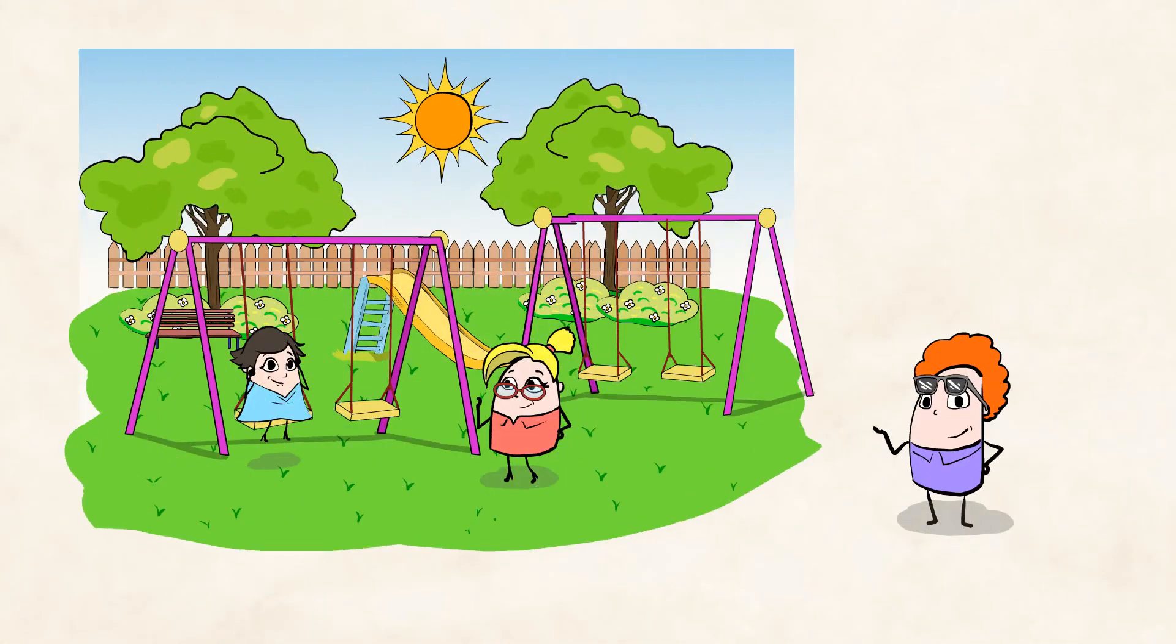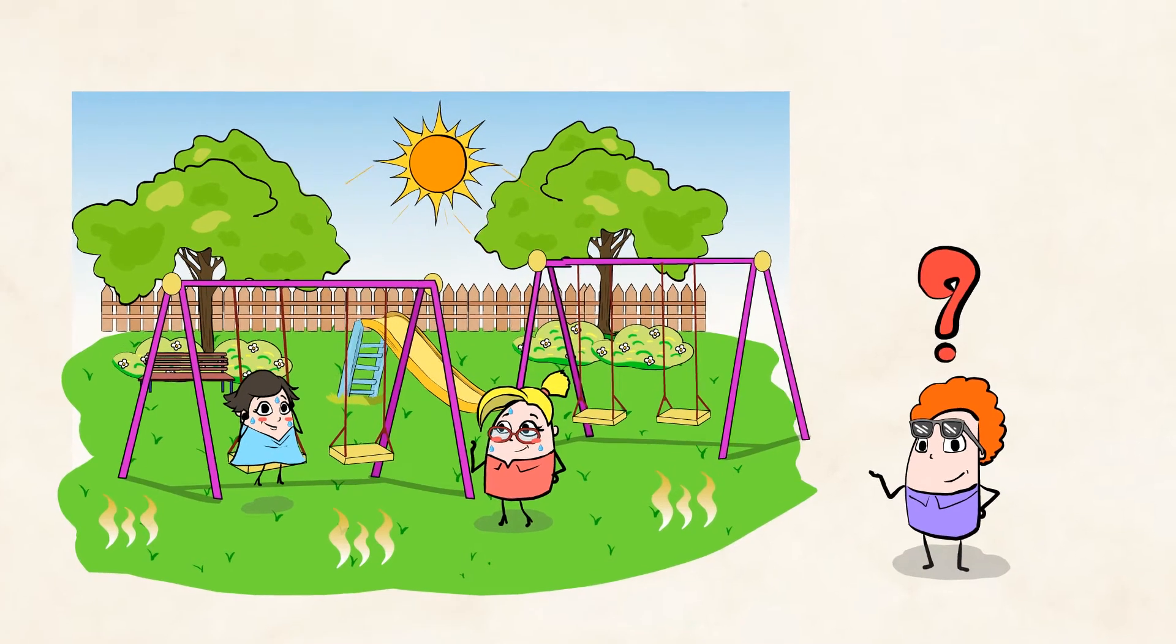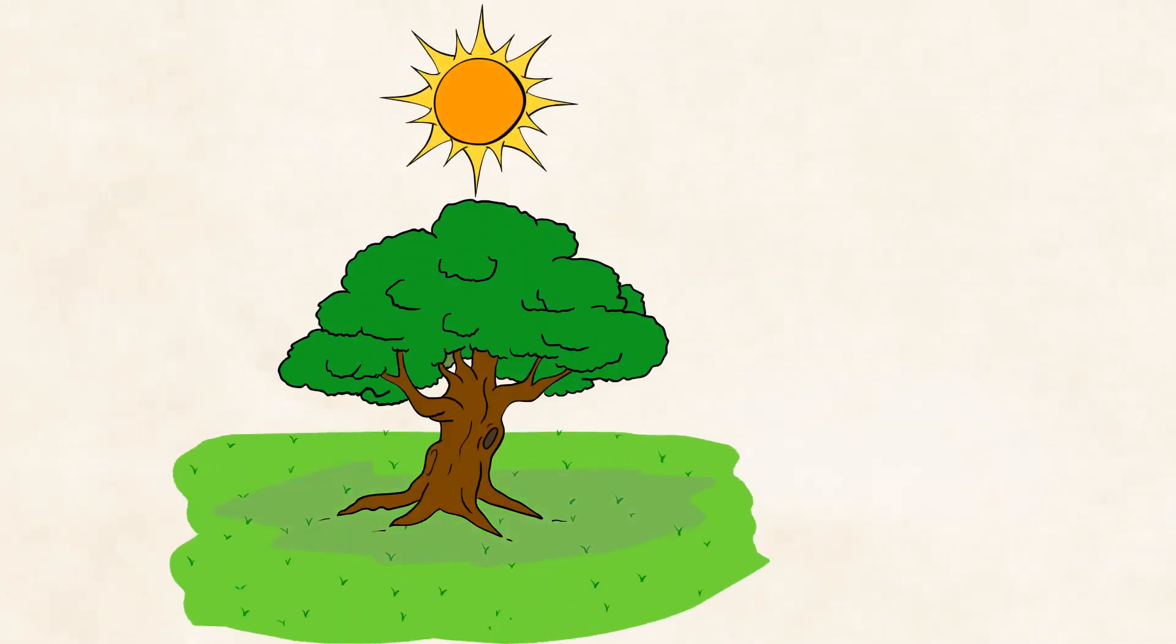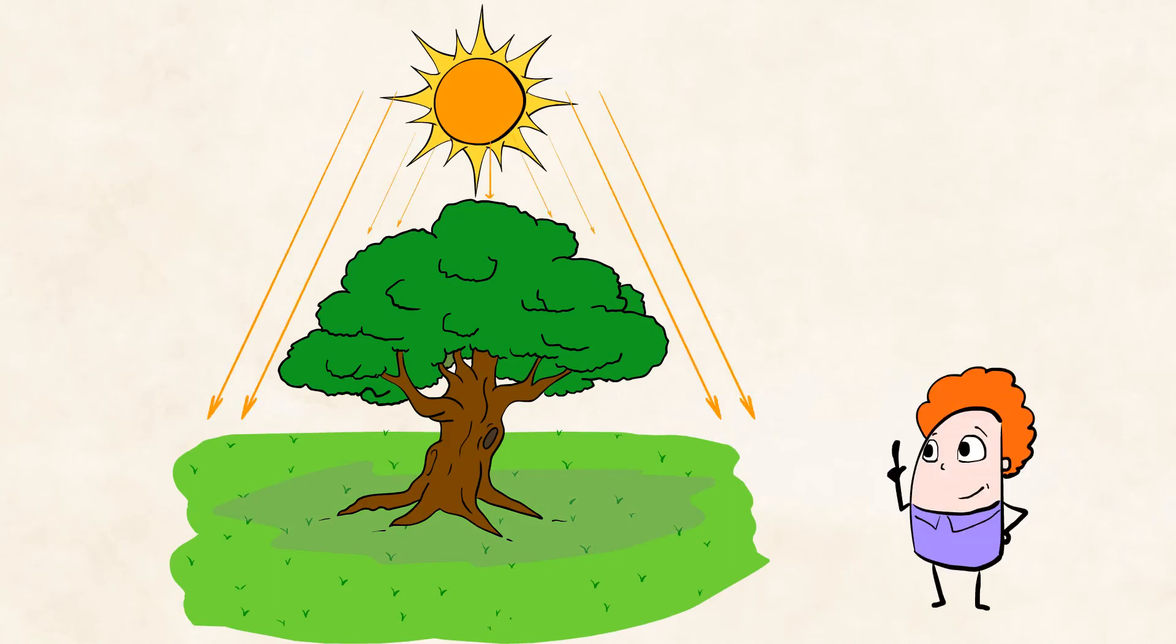Check out this playground with all these cool structures. Looks like tons of fun, but it's so hot. The sun is high in the sky, and everyone's a bit sweaty and red. What could these friends do to get a break from the heat and sunlight? What makes a good spot to rest on a hot, sunny day? That tree has lots of branches full of leaves that are blocking the sun. I bet that would be a great spot to rest.